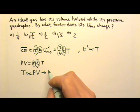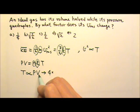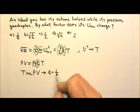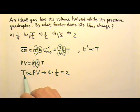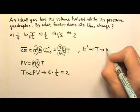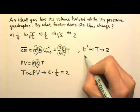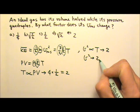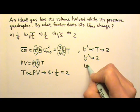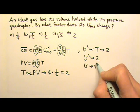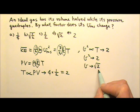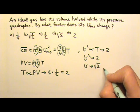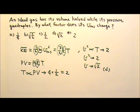The pressure quadruples while the volume is halved, so temperature changes by a factor of 4 times one-half equals 2. That means v squared changes by a factor of 2, and taking the square root, v changes by a factor of square root of 2. The answer is d.